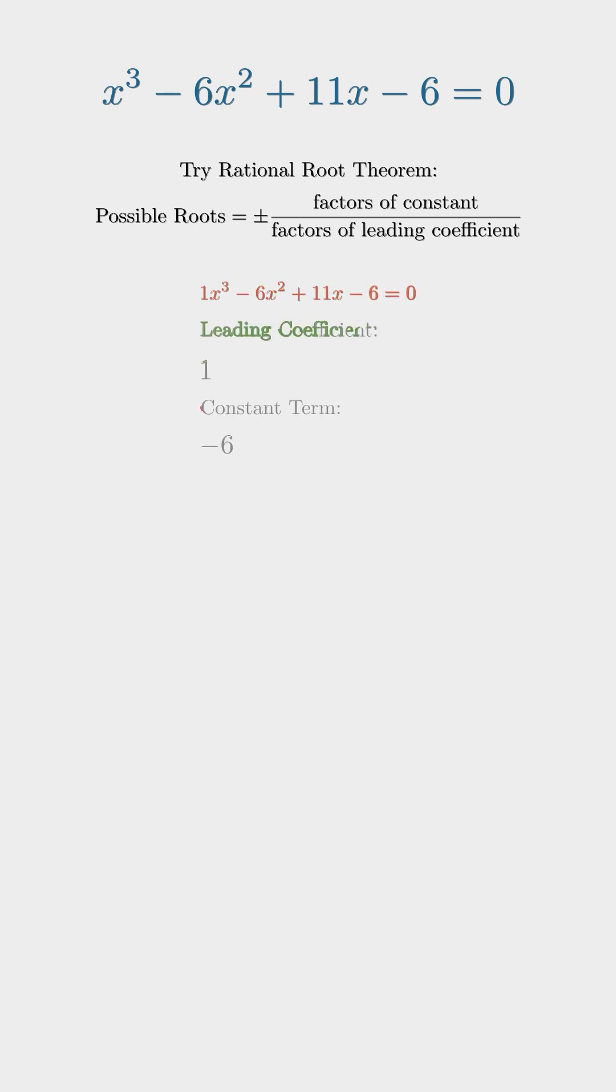The leading coefficient is 1, and the constant term is -6. So we divide the constant term by the leading coefficient, -6 divided by 1 equals -6.